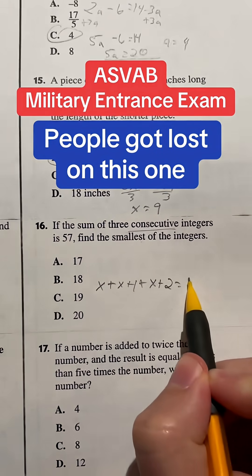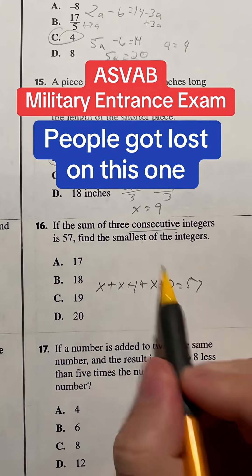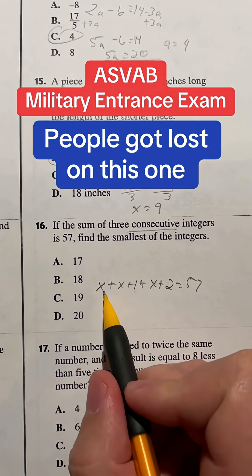The sum of them, so when we add them up, has to be equal to 57. So now we need to find the smallest one of those integers, which would be x. So in this case, we're just solving for x.